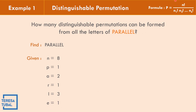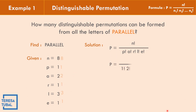We use the formula for distinguishable permutation: P equals n factorial over the product of the factorials of each letter — P, A, R, L, and E. Replacing all values: P equals 8 factorial over 1 factorial times 2 factorial times 1 factorial times 3 factorial times 1 factorial.